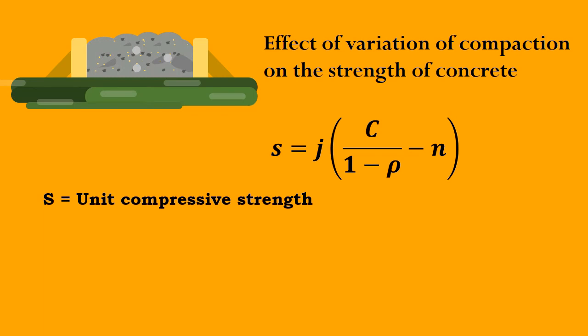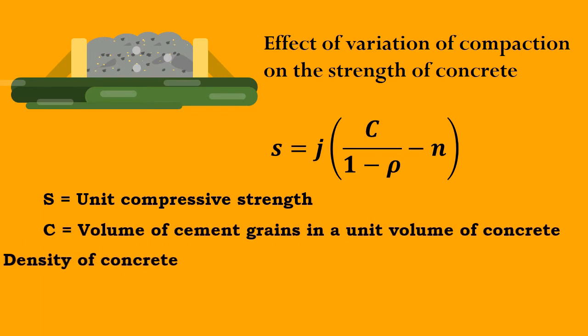Where S is the unit compressive strength, C is the volume of cement grains in a unit volume of concrete, ρ is the density of concrete, and J and N are constants.